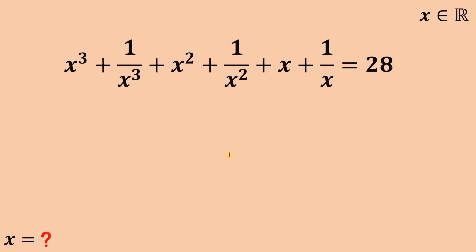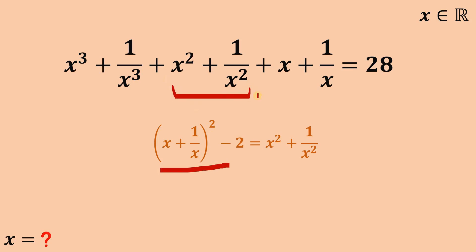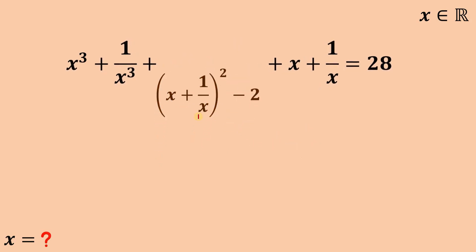Here's the reason: if we square x plus 1 over x, we get x squared plus 2 plus 1 over x squared. Rearranging, we get that x squared plus 1 over x squared equals x plus 1 over x raised to the power of 2 minus 2. So we can replace this with its equivalent in terms of x plus 1 over x.